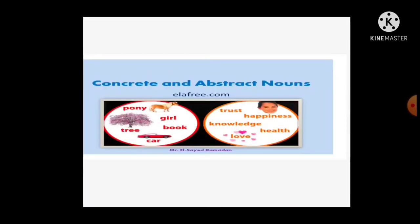Concrete and abstract nouns: pony, girl, book, tree, car — these we can see and touch. But trust, happiness, knowledge, health, love, kindness, honesty, laughter, fear, childhood, manhood, friendship, sweetness — these are coming under the abstract noun.